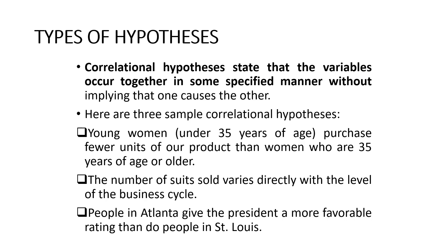Within relational, we talk about correlational hypothesis first. Correlational means variables occur together in some specified form without implying that one causes the other. For example, young women under 35 years of age purchase fewer units of our product than women who are 35 years of age or older. Another example: the number of suits sold varies directly with the level of the business cycle.